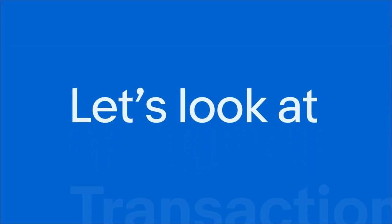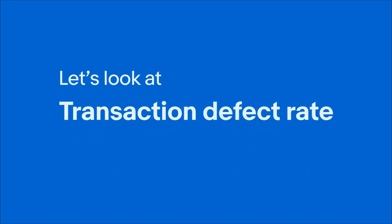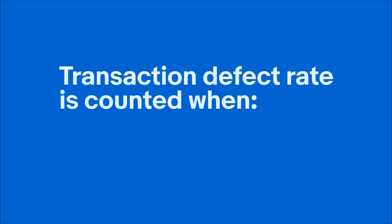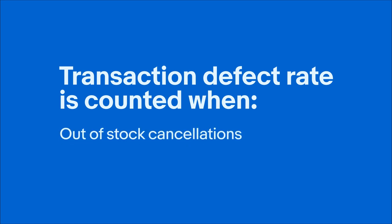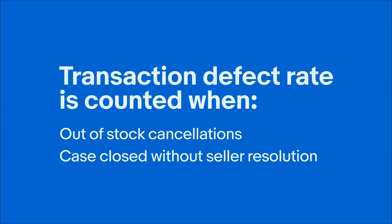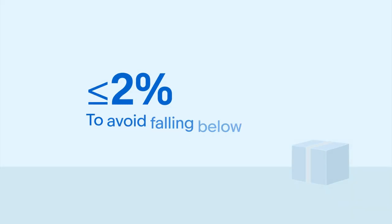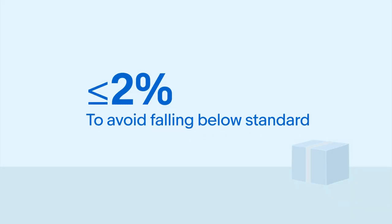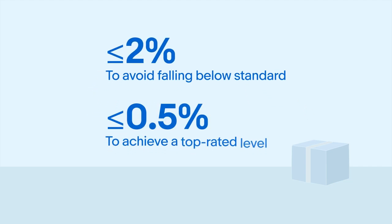Now let's look at the transaction defect rate. A transaction defect is counted when either you unexpectedly cancel an order or the item was out of stock, a buyer reports an issue and you are unable to resolve it within the three-day period, or a case is closed without seller resolution. You want to aim for a defect rate of two percent or less to avoid falling below standard, and 0.5 percent or less to achieve a top rated level.